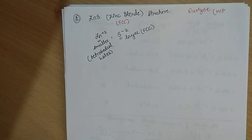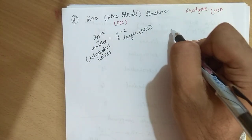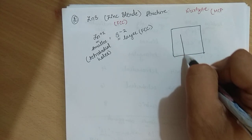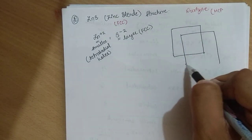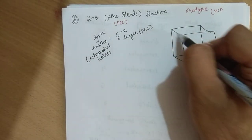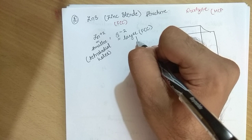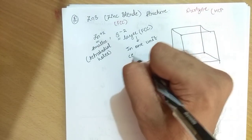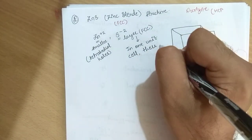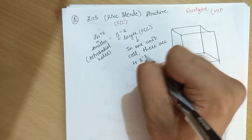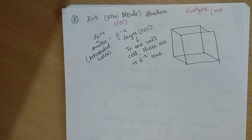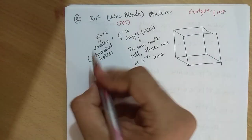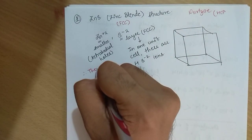S²⁻ will form an FCC structure. Because it forms FCC structure, in one unit cell there are 4 S²⁻ ions. Now if there are 4 S²⁻ ions, therefore there will be 8 tetrahedral holes, because the number of tetrahedral holes is always 2 times the number of atoms.